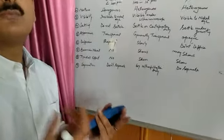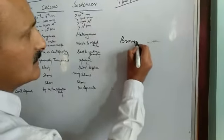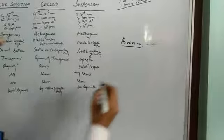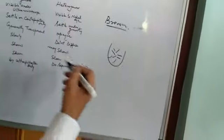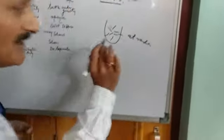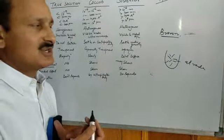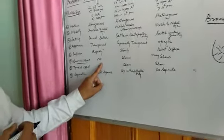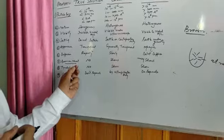Another special property is Brownian motion. The name is given after the scientist Brown. Brownian motion means the movement of particles in all directions — at random — and this movement is known as Brownian motion. True solutions do not show this effect. Colloids and suspensions both show the characteristic feature of Brownian motion.